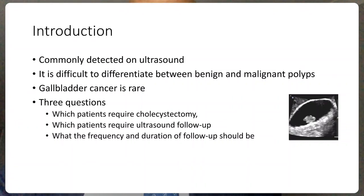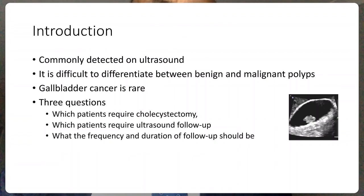Gallbladder polyps are a common finding on ultrasound scan and it is very difficult to differentiate on ultrasound features between a benign and a malignant polyp. The ultrasound is good for finding polyps but it will not be able to tell us what type of polyp. If you look on the right hand side of the screen you'll find an ultrasound scan of the gallbladder showing what looks like a mushroom coming out of the inner lining mucosa of the gallbladder — this is a polyp, and when we find one we need to investigate further and know what we are going to do about it.